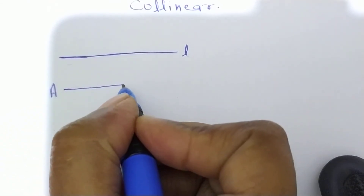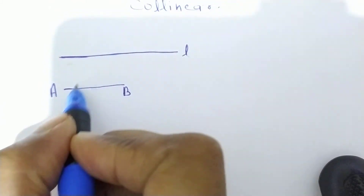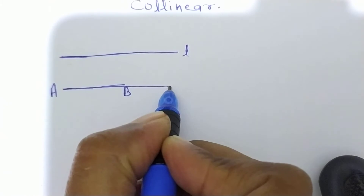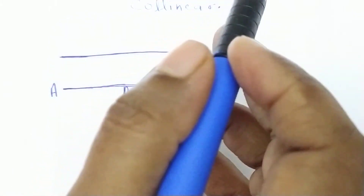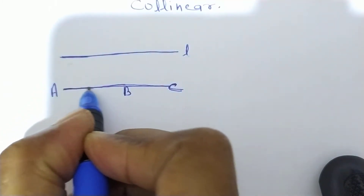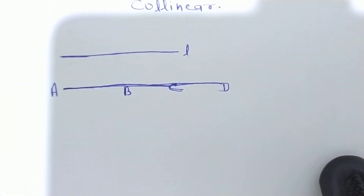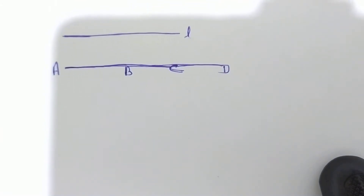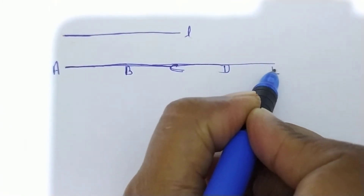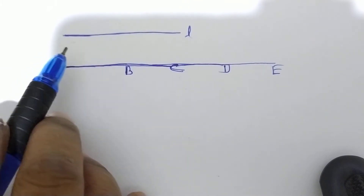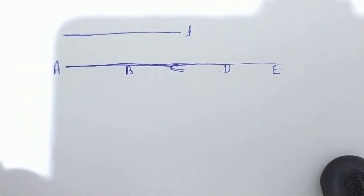Yahaan par hamne A rakha aur yahaan par B rakha. AB ek line ho gayi. Doosri line hai AC — isi point A se AC. Phir AD, yani again A to D. Aur phir AE. Toh L ek line hai jiske parallel mein AB, AC, AD and AE lines hain.